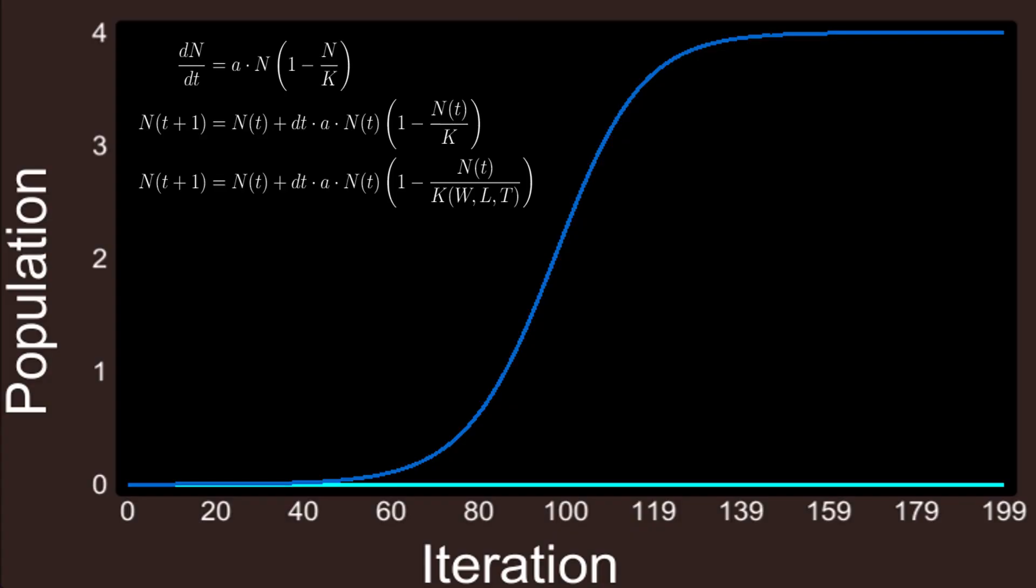To simulate the growth of vegetation, I use a set of differential equations. This here shows the logistic growth function. N is the population size, and A is the growth rate. If vegetation is left undisturbed, it will grow after the carry capacity K. In my case, the carry capacity of a plant is determined by the amount of light, water, and temperature.